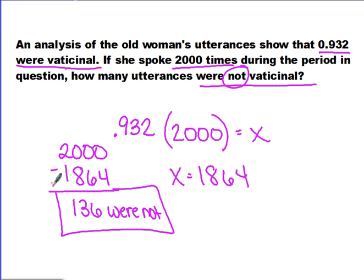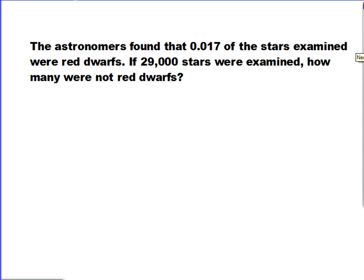The next equation: the astronomers found that 17 thousandths of the stars examined were red dwarfs. If 29,000 stars were examined, how many were not red dwarfs? This is very similar to the last problem, so I'm going to have you solve this one on your own. Pause the video to solve, then hit play when you're ready to proceed with the next section.